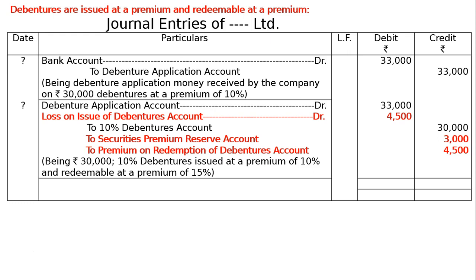To securities premium reserve account, that is Rs 3,000. To premium on redemption of debentures account, that is 30,000 into 15% = Rs 4,500. Being Rs 30,000 in 10% debentures issued at a premium of 10% and redeemable at a premium of 15%. The journal totals both debit and credit columns are the same: Rs 70,500. And this is the final answer.